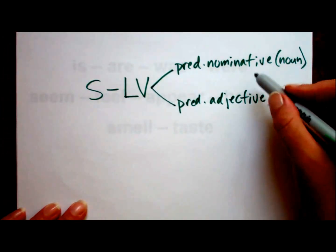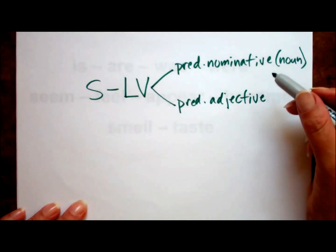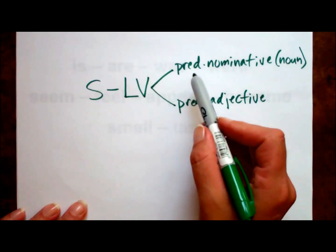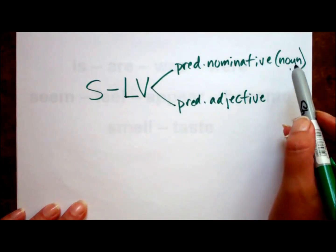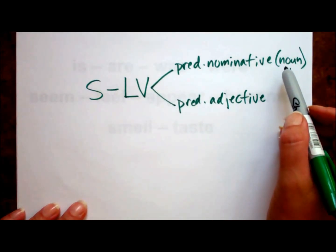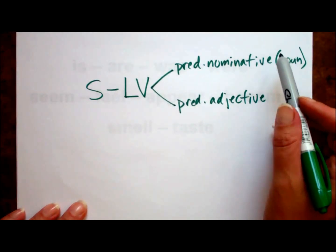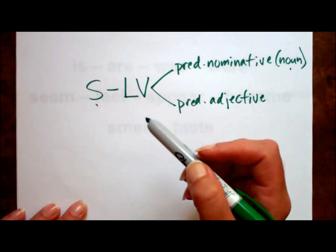The names of these complements are pretty descriptive. A predicate nominative is a noun in the predicate that identifies or renames the subject.